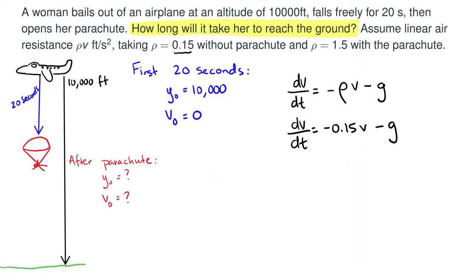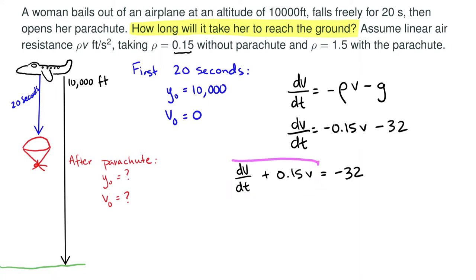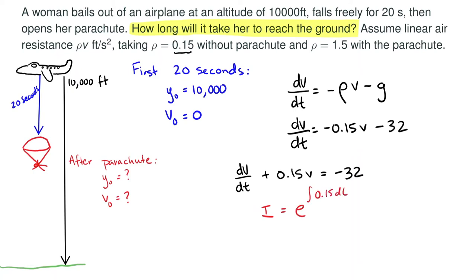Now we have a differential equation that we can work with. Adding 0.15v to both sides, we get dv/dt plus 0.15v equals negative 32. We see that we have a linear first order differential equation, so we can use the integrating factor method. The integrating factor — I'll call it I rather than rho to avoid confusion — is e to the integral of 0.15 with respect to time, which gives e to the 0.15t.